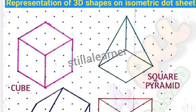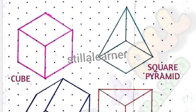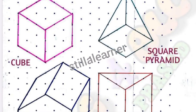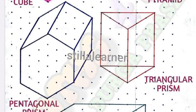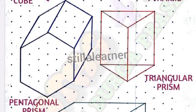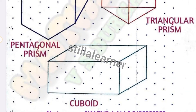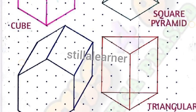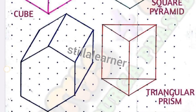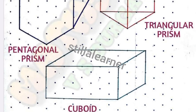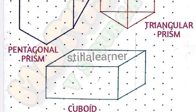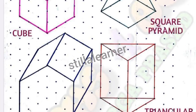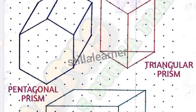These are the 3D shapes drawn on isometric dot paper: first one is a cube, then a square pyramid, then a pentagonal prism, then a triangular prism, and a cuboid.